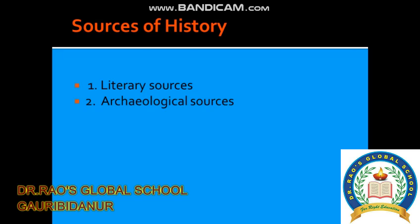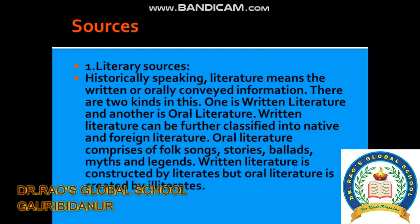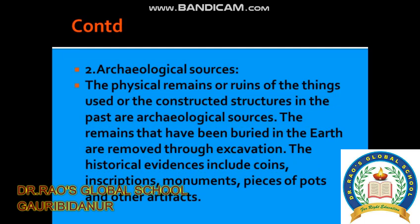Sources of history: literary sources and archaeological sources. Literature means written or orally conveyed information. There are two kinds: written literature and oral literature. Written literature can be further classified into native and foreign literature. Oral literature comprises folks and stories, ballads, myths, and lessons. Written literature is constructed by literates, but oral literature is created by illiterates.